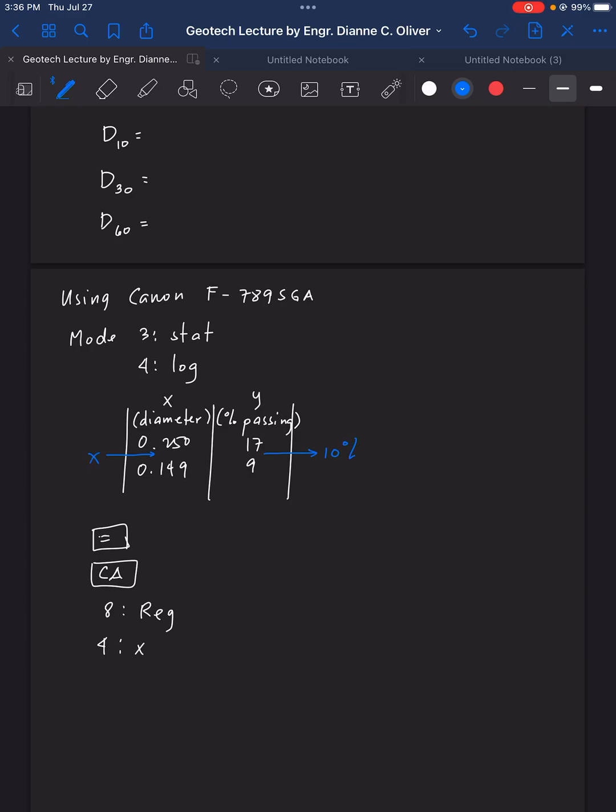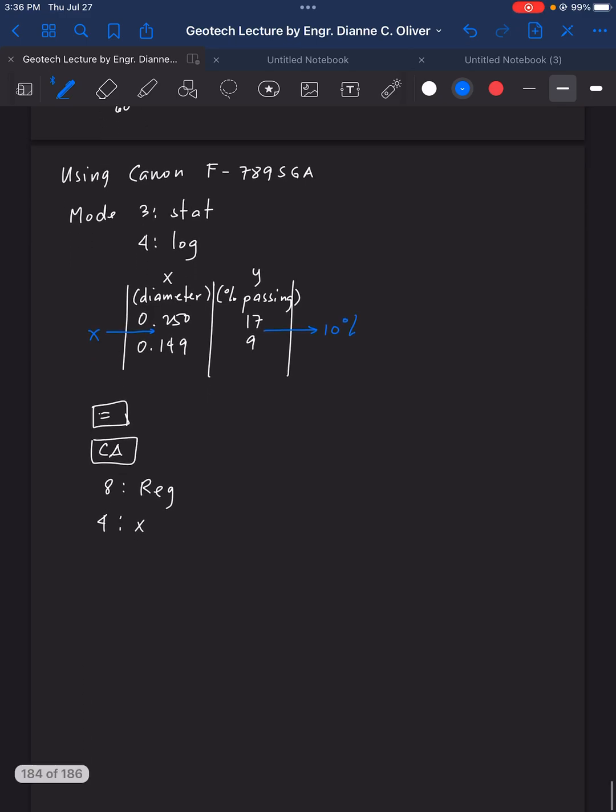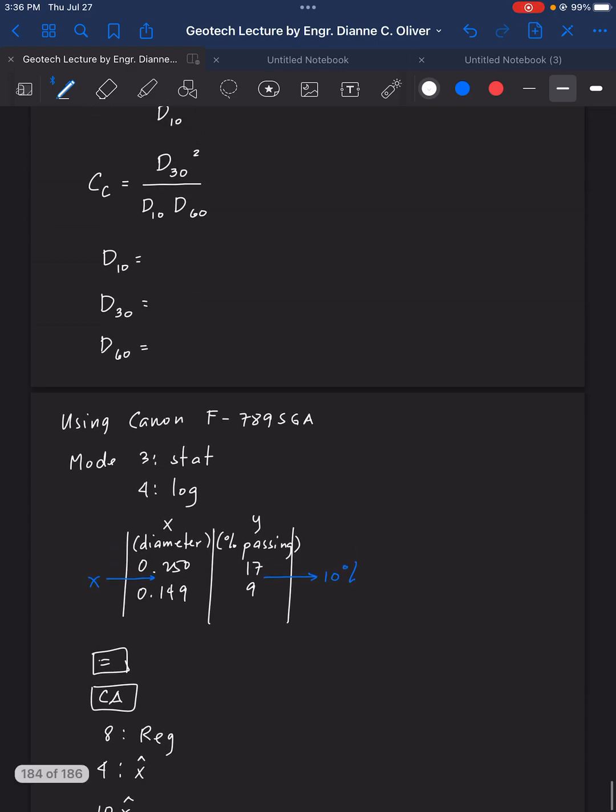Because we are looking for the diameter, the value of the diameter at 10 percent passing. The unknown there is the X, or the diameter. So input there, in your calculator, 10, 10 X. 10 X is equal to 0.159 mm. So that is your D10. Therefore, D10 equals 0.159 mm.